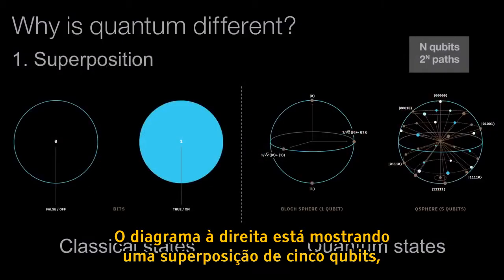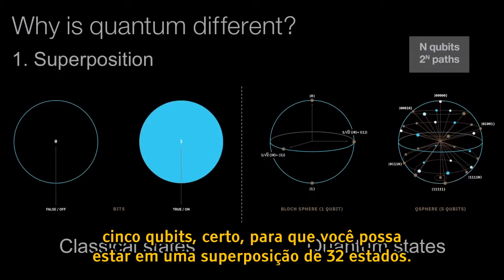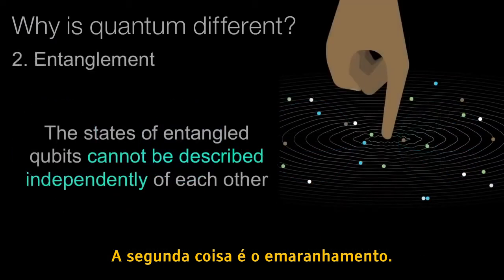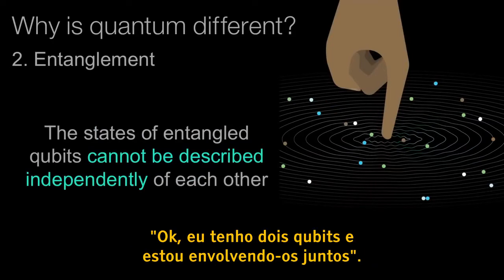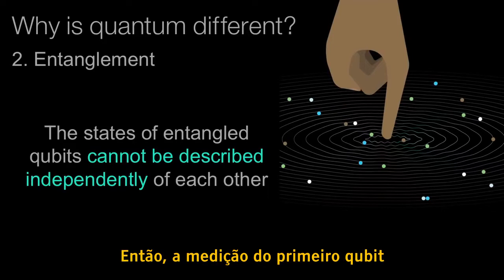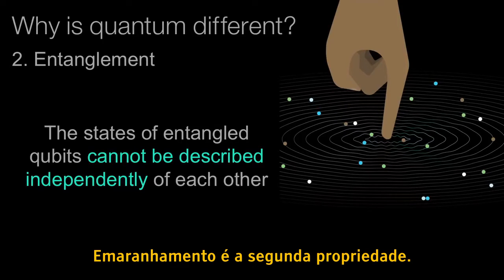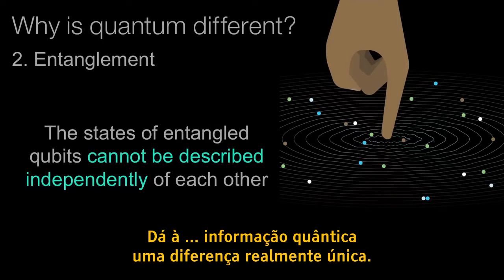The diagram on the right shows a superposition of five qubits — you can be in a superposition of 32 states. Superposition is the first thing. The second is entanglement. With two qubits entangled together, measuring the first qubit can tell me something about what will happen when I measure the second qubit. Entanglement is the second property that gives quantum information a really unique difference.